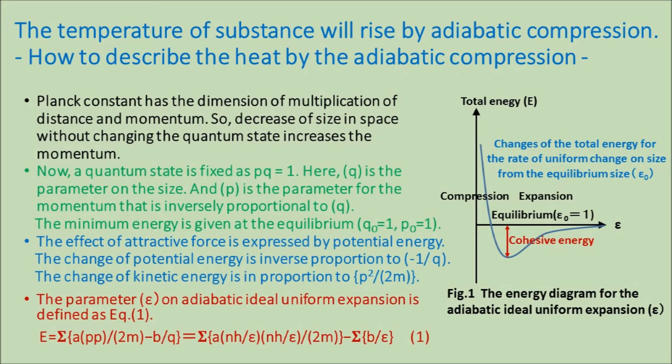The effect of attractive force is expressed by potential energy. The change of potential energy is inversely proportional to Q, and the change ratio of kinetic energy is proportional to P squared. The parameter Epsilon for adiabatic ideal uniform expansion is defined as equation 1. Figure 1 is the energy diagram showing the variation of the adiabatic ideal uniform expansion Epsilon.